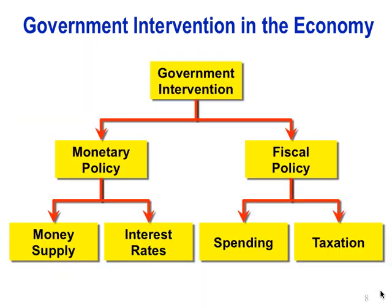The President and Congress are going to determine fiscal policies. The Federal Reserve, primarily but with the influence and approval of President and Congress, will dictate monetary policies. Government intervention can fall into monetary policy — influencing the money supply and interest rates — or fiscal policy, which is about government spending and taxation. These two tools are how the government intervenes in and influences the economy.